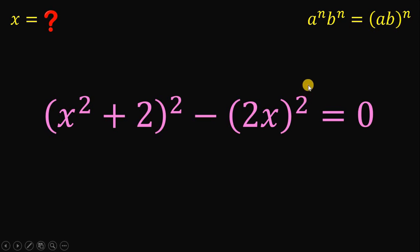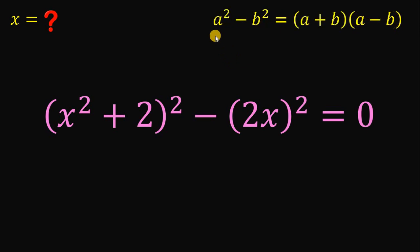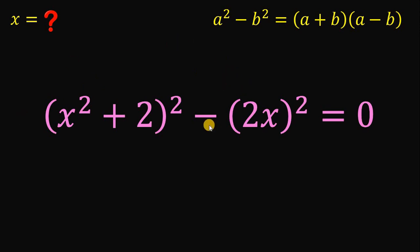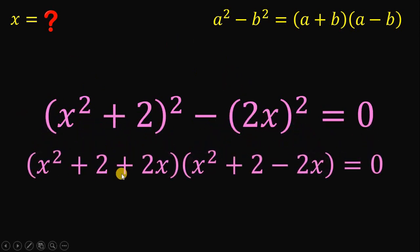Now we will force-factor our original equation because we have a squared number minus another squared number, so we can use the difference of two squares. If we have a squared minus b squared, this can be written as (a plus b)(a minus b), where in our equation a represents (x squared plus 2) and b represents 2x. So factoring the left-hand side gives us (x squared plus 2 plus 2x) multiplied by (x squared plus 2 minus 2x).